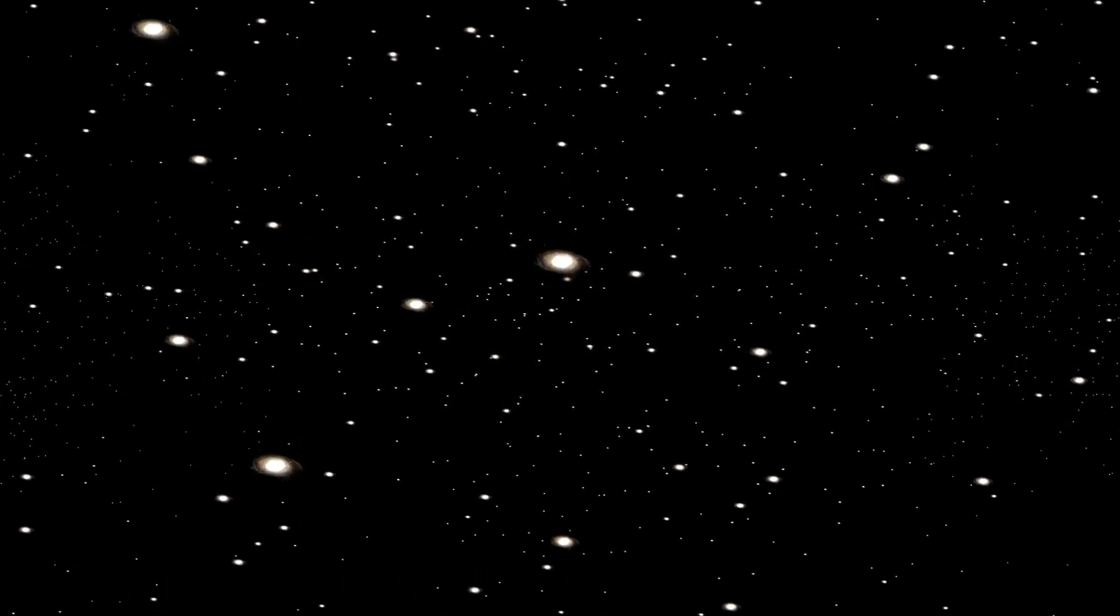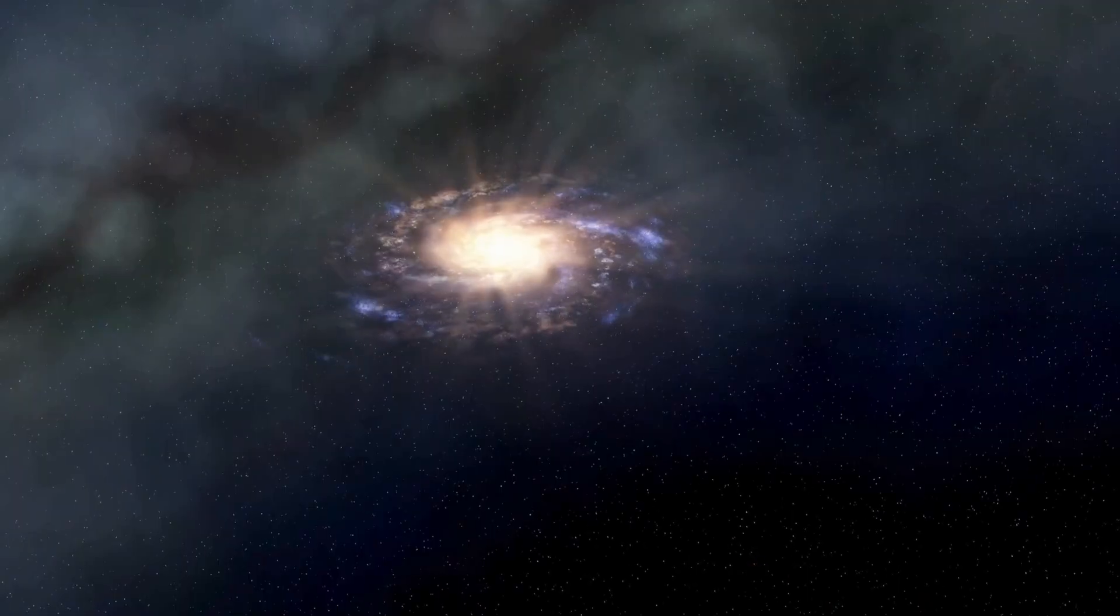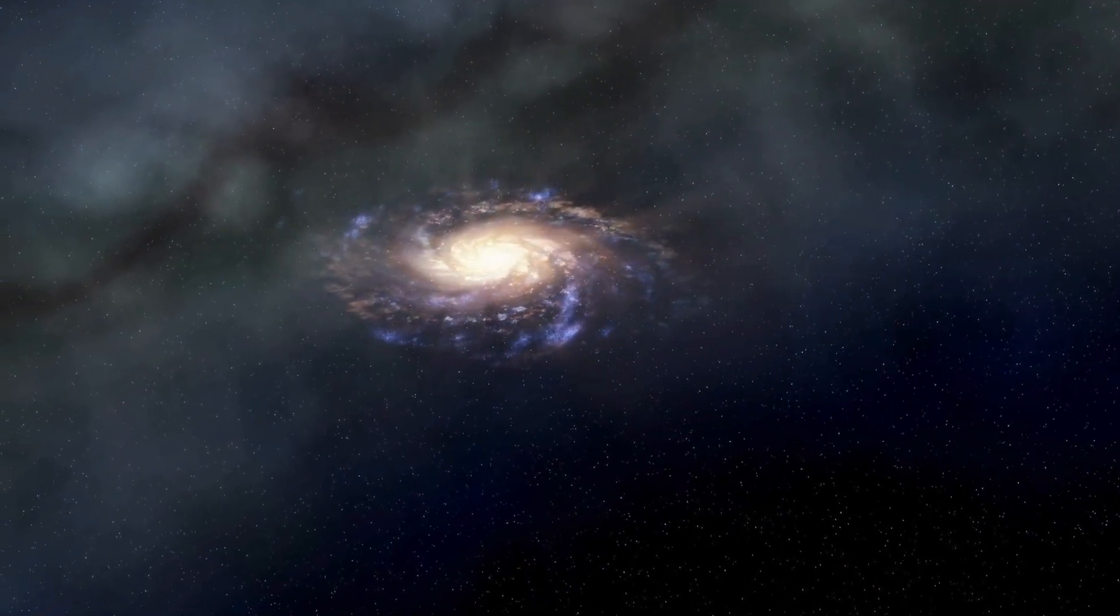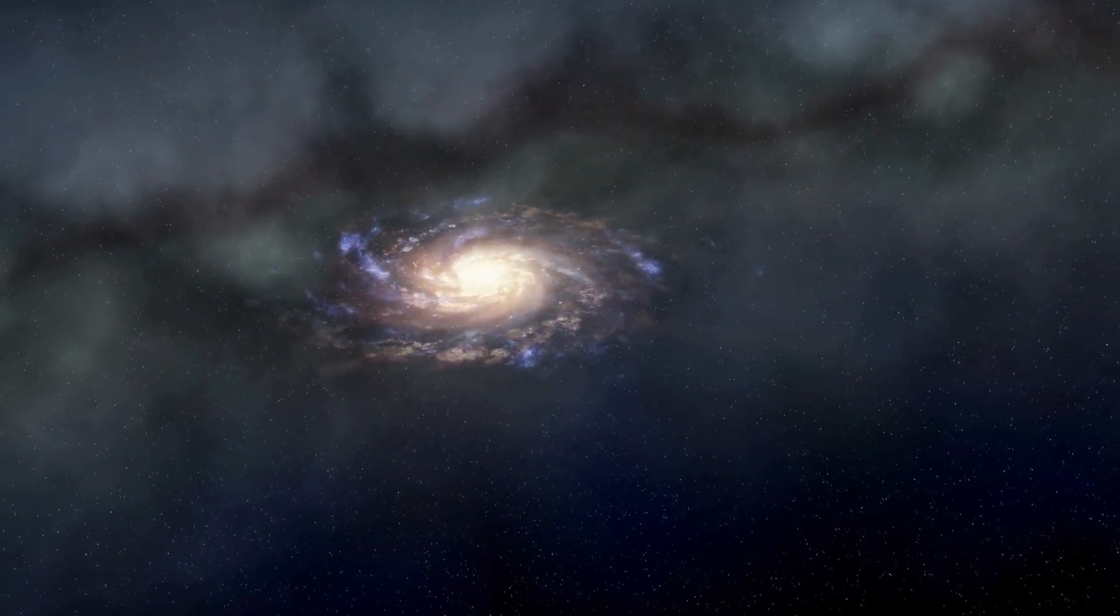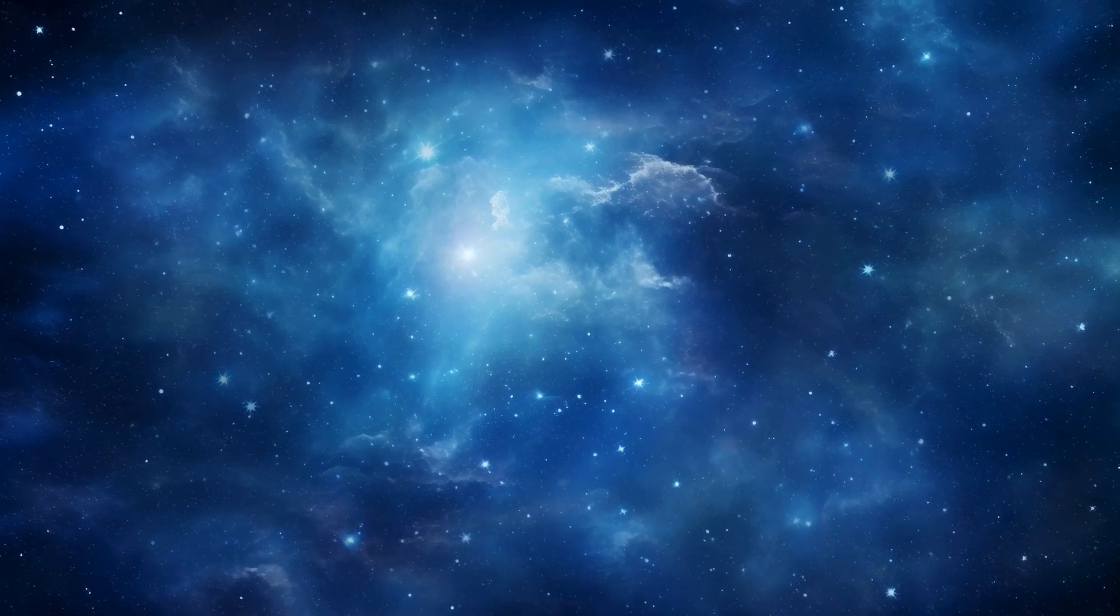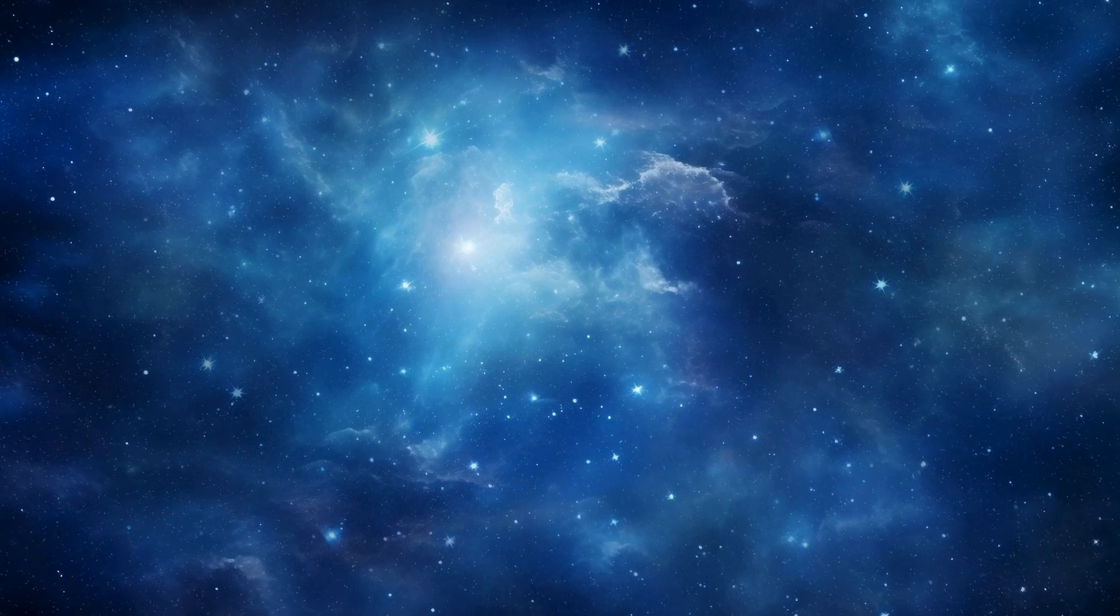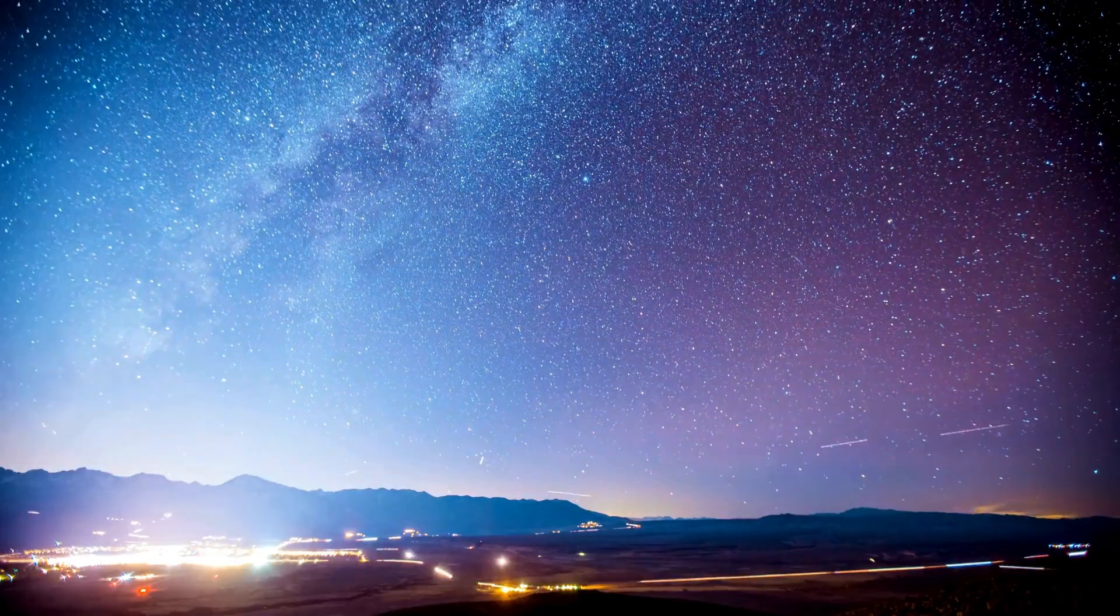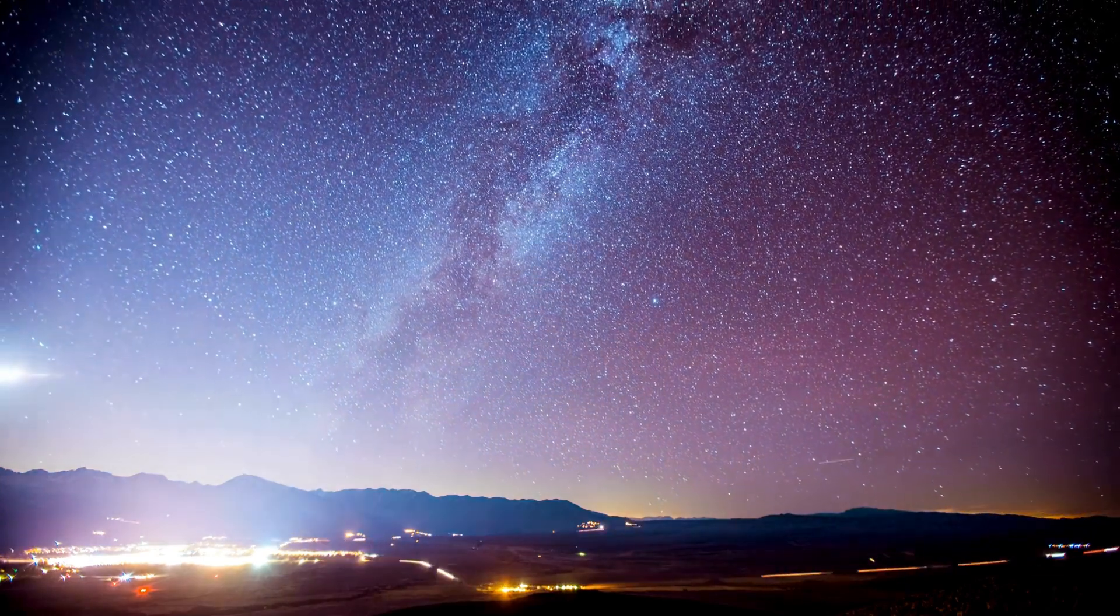Now let's revisit Methuselah star. The ancient aura around it isn't just random. Astronomers tagged it with a crazy old age by checking out its cosmic neighborhood. Stars can be split into categories based on how much bling, or heavy elements like iron, they have. Our sun is a bit of a metal head, belonging to Population 1 stars. Methuselah star, on the other hand, is like an old-school rock star from Population 2, rocking fewer heavy elements. It's this stellar bling-out that helps astronomers play cosmic archaeologists, deciphering the age tales of these celestial beings.